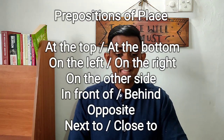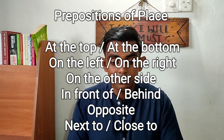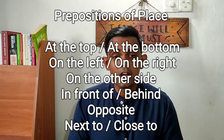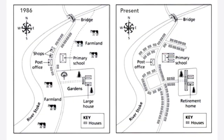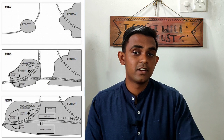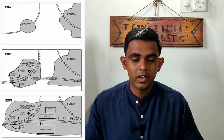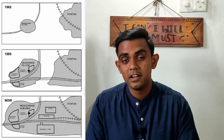Here are some prepositions of place useful when writing the answer to a map type question: at the top, at the bottom, on the left, on the right, on the other side, in front of, opposite, behind, next to, close to. These are extremely important words, especially if the cardinal directions are not given. In this question, north, south, east, and west have been given, so you can write relative to those directions — for example, the housing estate is to the west of the leisure complex. But in the map question we are discussing, the cardinal directions have not been given. Therefore, these prepositions of place are very important.